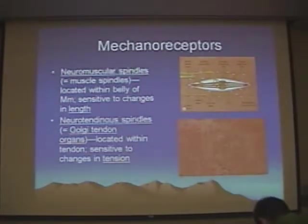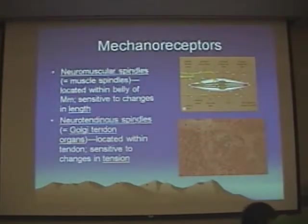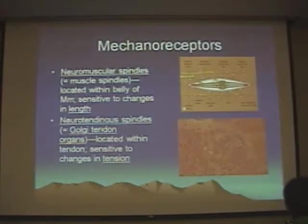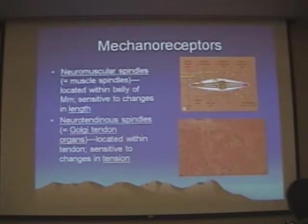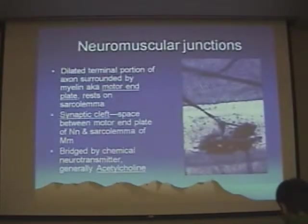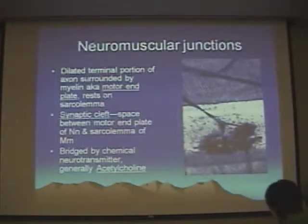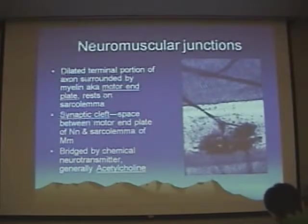Within muscles, we have mechanoreceptors. These can be neurotendinous or musculotendinous spindles. The Golgi tendon organs are the most common. They're sort of nondescript and a little challenging to identify. They have a connective tissue capsule and some specialized structures within them. We also have neuromuscular junctions, which can show up very nicely. These are basically the motor end plates for the voluntary axons that invade the muscle fibers.